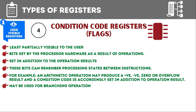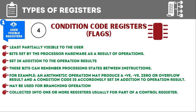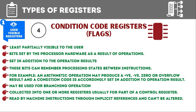Condition code registers are used for branching operations. For example, if the result was positive we branch to one condition, if negative to another, if zero to yet another. They are collected in one or more registers and usually form part of a control register. Machine instructions can read these condition code registers through implicit references — we need not put explicit references in the code — and we cannot alter these results because they are set by the operation result automatically.